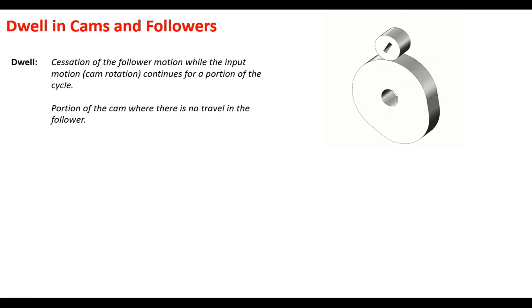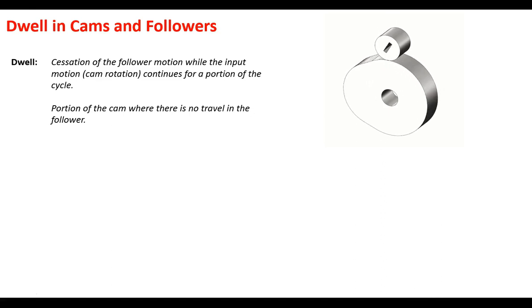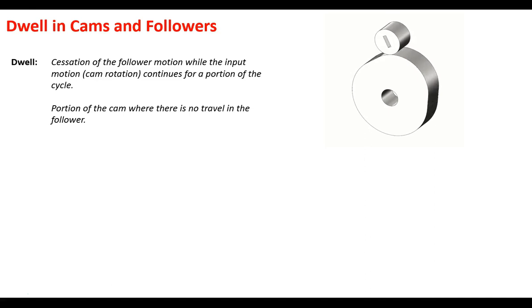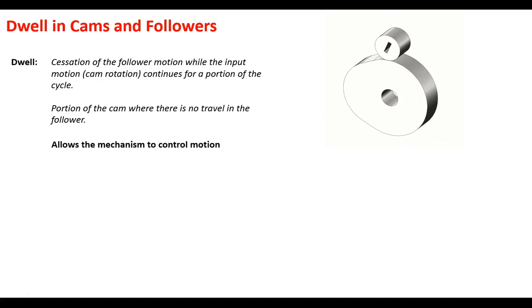Probably the most important term is dwell. Dwell is the cessation of follower motion — the follower motion has stopped while the input motion, meaning the cam is still rotating, continues for a portion of the cam. In other words, it's the ability to stop the follower from moving without stopping the entire system. The follower stays put — that is called a dwell — even though the camshaft itself is still in rotation.